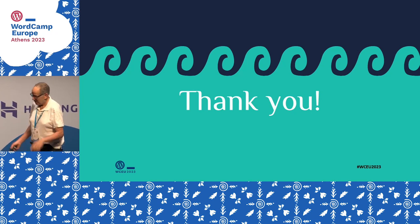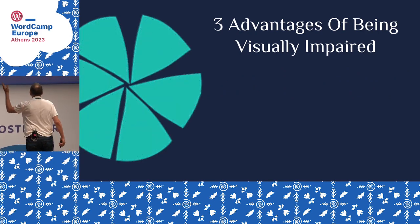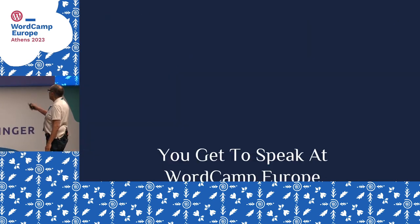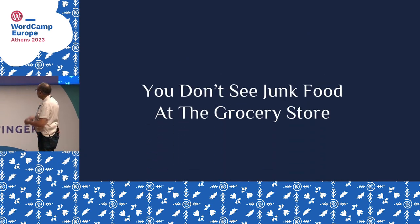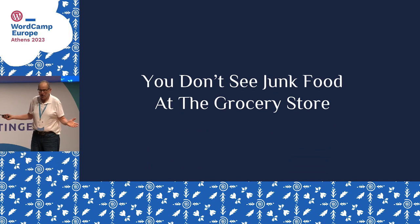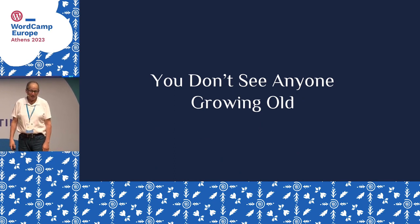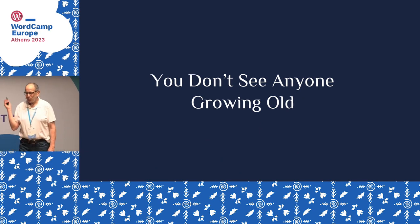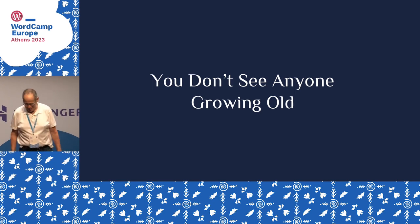But wait, there's more — there's always more. Three reasons why being visually impaired really is not as bad as you think. First, you get to speak at WordCamp Europe, which I think is pretty good. Number two, you don't see junk food in the grocery store, so you're not as apt to buy it. And one of my favorites: you don't see people getting old, especially yourself. There's also a fourth I didn't put up there: you can drink as much alcohol at a party as you want — you don't have to worry because you're not going to be driving.